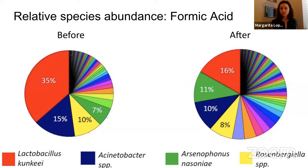This is still fairly preliminary data, so we're still trying to understand what these changes mean. We also need to analyze the ITS data to know how the fungi were affected by exposure to formic acid. But it's pretty clear from what we're showing here that miticides are capable of causing a shift in the balance of the microbiome, which could potentially lead to impacts in bee bread quality. We're excited to keep exploring this data to learn more about how these changes affect the bees themselves.